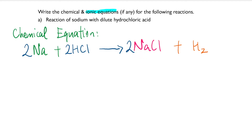Now I have two sodium atoms on the right, so I need to also balance the sodium on the left. After you're done balancing everything, remember you need to add back the physical states. In this particular video, you'll understand why we always ask you to write the physical states. Sodium is a metal, so it's a solid — most metals are solids, except mercury of course.